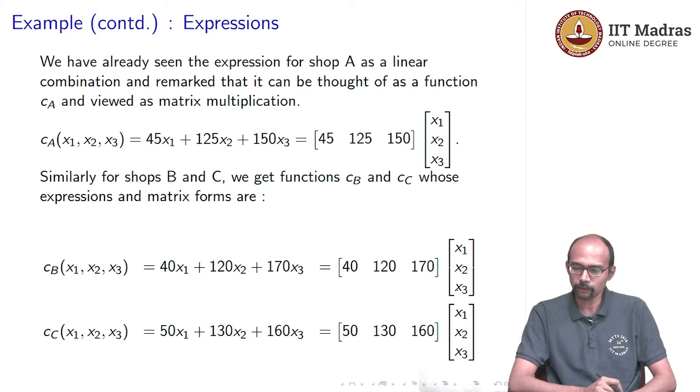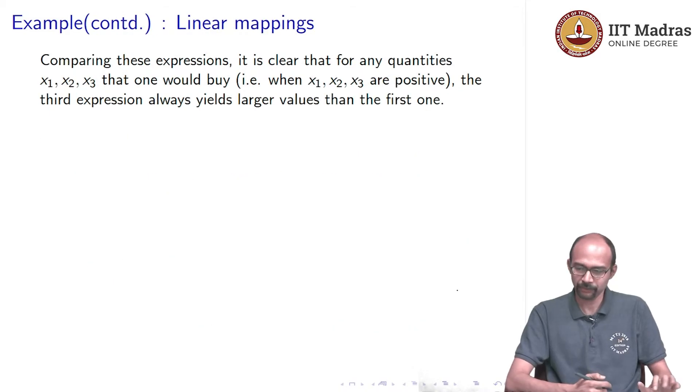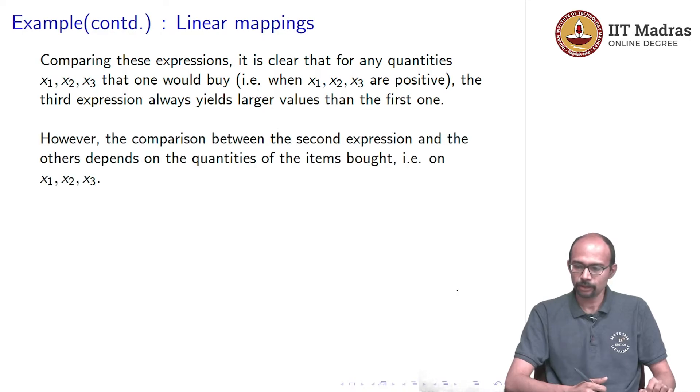However, when you compare it with shop A, all three are more expensive for shop C. So, assuming everything else is the same, you would always prefer shop A over shop C. The third expression always yields larger values than the first one. Of course, we are talking about commodities, so we think of them as buying commodities from a grocery shop. So, x1, x2, x3 are always positive numbers. But we do not know how to compare between the second shop that is shop B and shops A and C. So, to compare this, we would want to compare these cost functions.